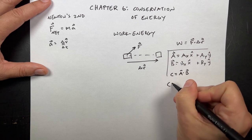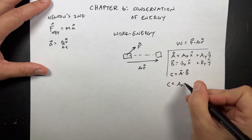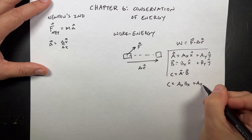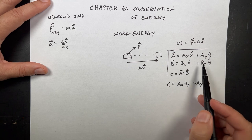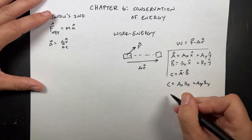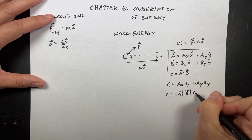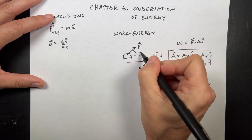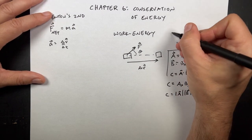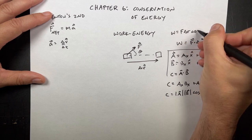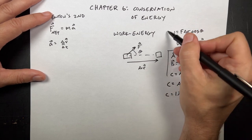I can calculate C pretty easily: it's just the x-component of A times the x-component of B, plus the y-component of A times the y-component of B — A_x B_x plus A_y B_y. You multiply the x's together, multiply the y's together, and add them. There is another way: this is also equal to the magnitude of A times the magnitude of B times the cosine of the angle between them. That's how the book uses it, writing A B cosine theta. So work is F delta R cosine theta — same thing, not a vector.